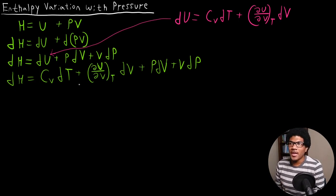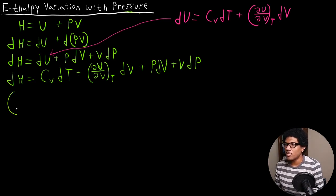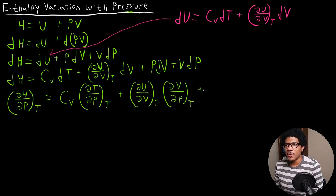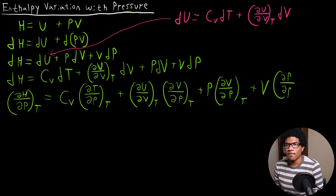Now we can take this general differential and look at the enthalpy variation specifically with respect to pressure. We differentiate with respect to pressure at constant temperature: (∂H/∂P)_T. The first term gives Cᵥ times (∂T/∂P)_T, plus the internal pressure term (∂U/∂V)_T times (∂V/∂P)_T, plus P(∂V/∂P)_T plus V(∂P/∂P)_T.